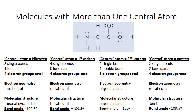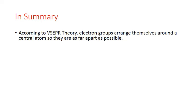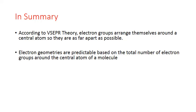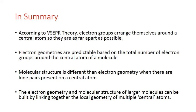Now we can pull all these local geometries together and apply them to the larger molecule to build a better picture of the structure of this amino acid. Incorporating all of these different bond angles and molecular shapes gives a more accurate representation of what that amino acid structure actually looks like. In summary, according to VSEPR theory, electron groups arrange themselves around a central atom so they are as far apart as possible. Electron geometries are predictable based on the total number of electron groups, molecular structure differs from electron geometry when lone pairs are present, and the geometry of larger molecules can be built by linking together the local geometry of multiple central atoms.